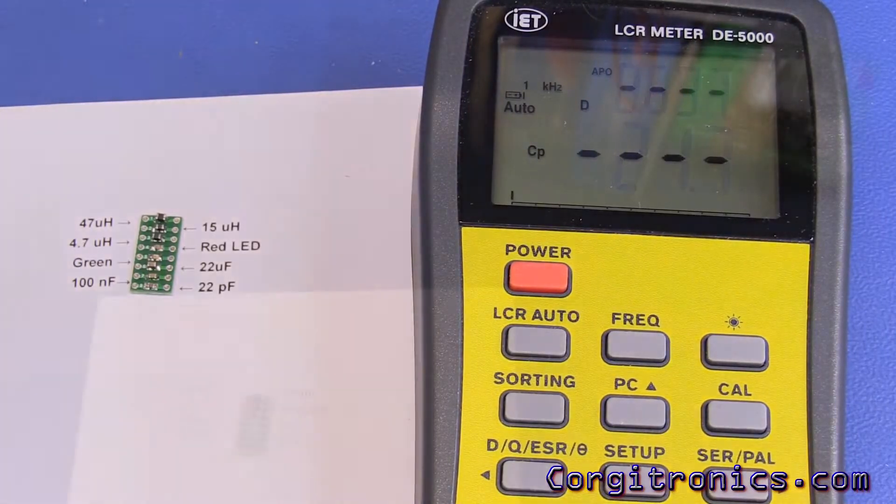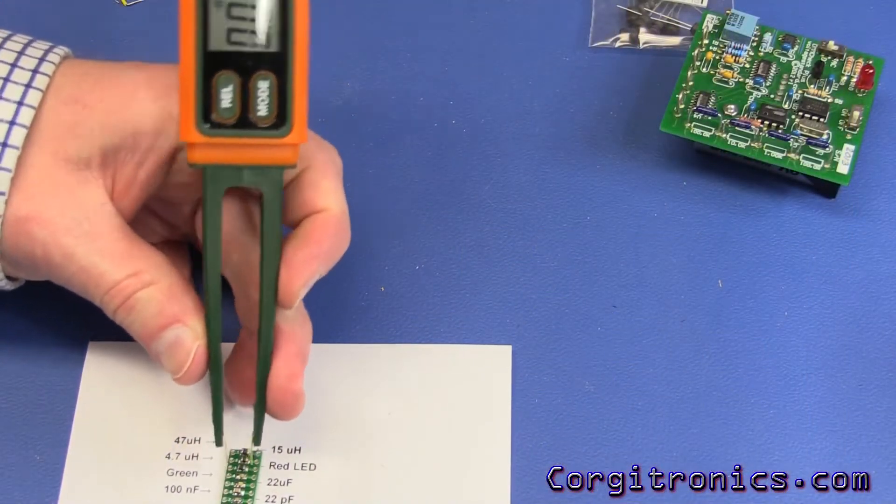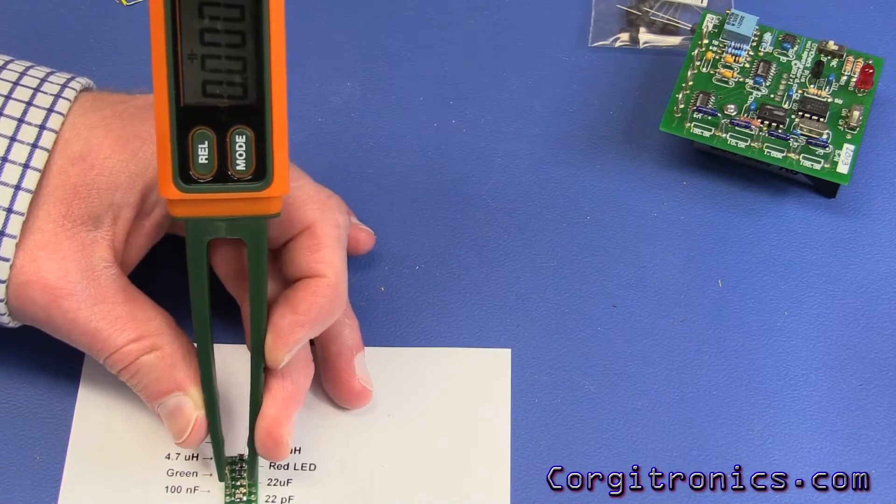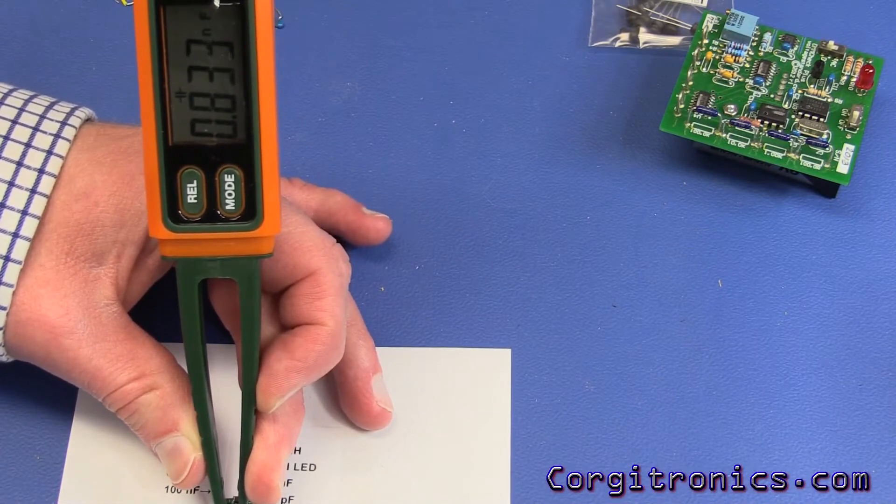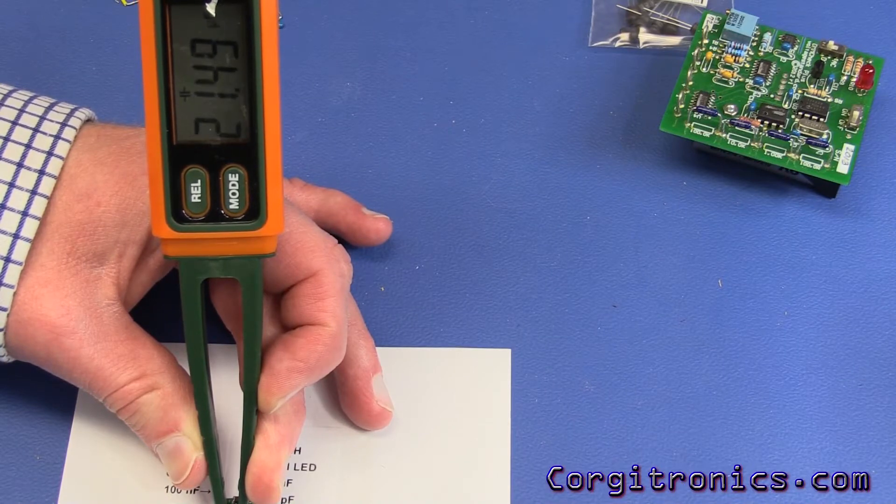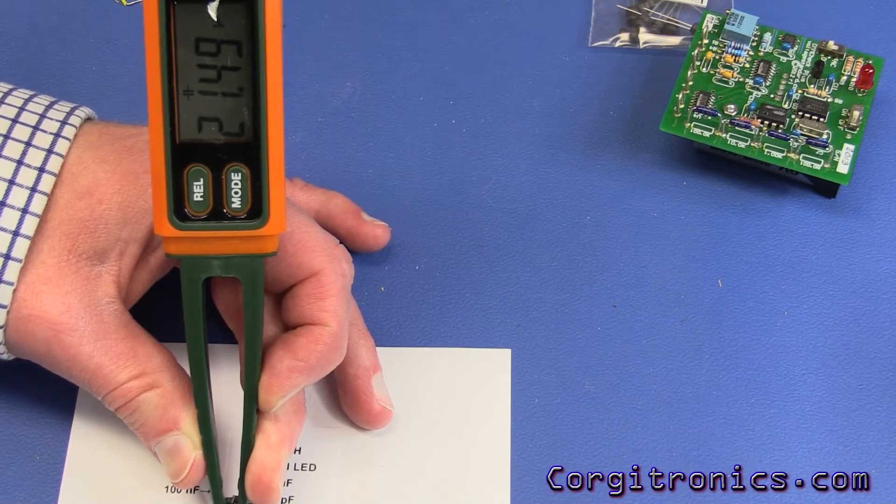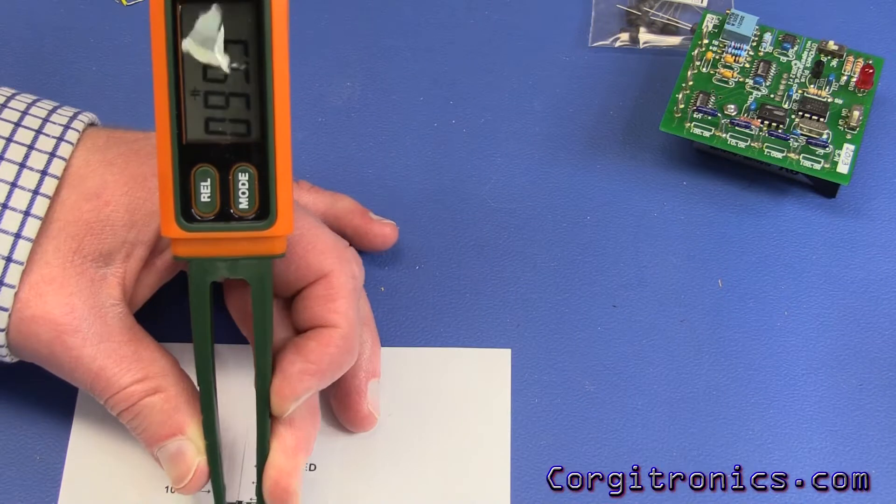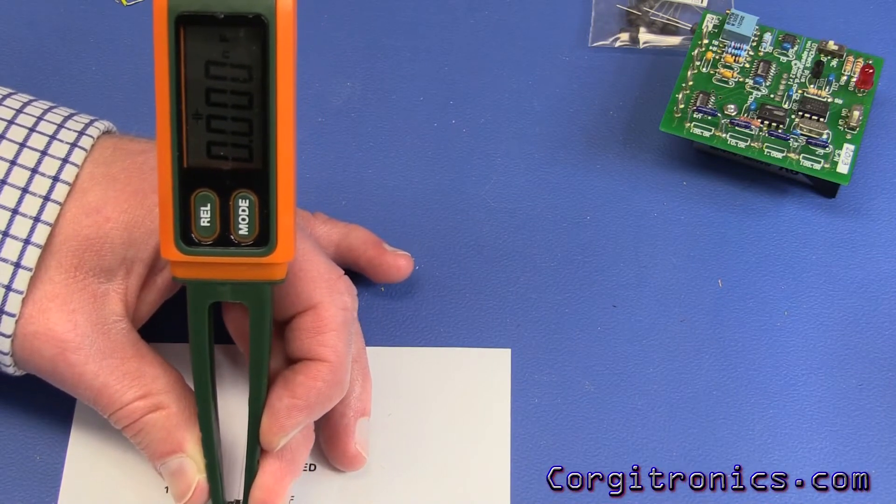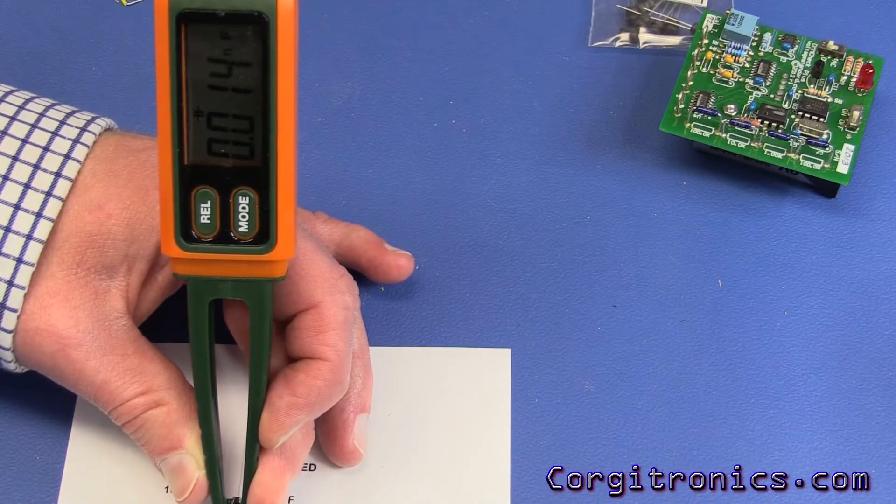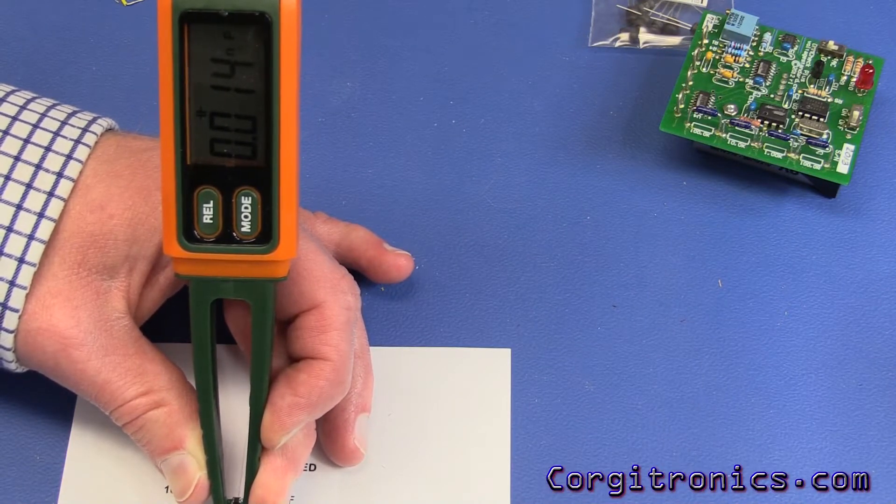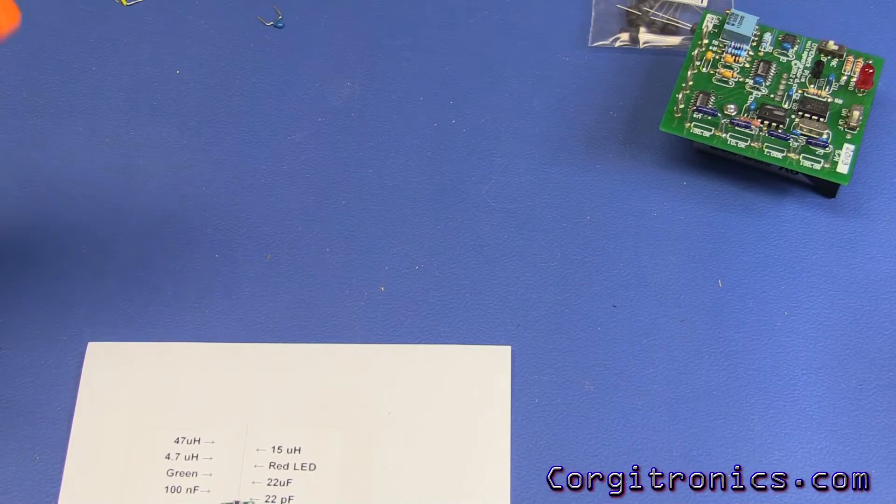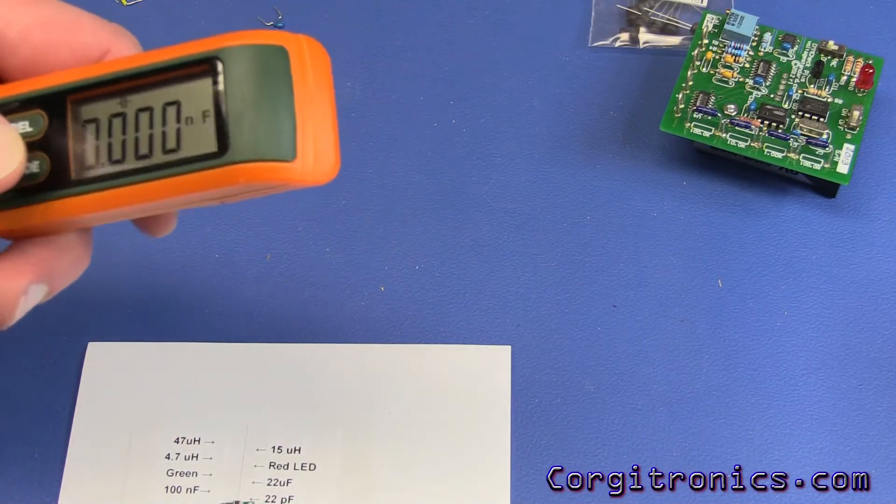On the first capacitor, for 22 microfarads, let's take a look and see if we can get a decent value. We go 21.4, so very close, that's pretty good. For 100 nanofarads, we're showing 99.4, almost exactly what the IET had. We also have the little 22 picofarad. Well, we're showing 14 picofarads for that on the screen, so it's probably pretty good. That's about as good as I can hope for for something like this.